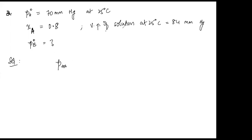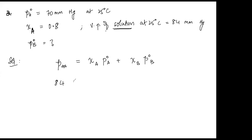Using P_total = X_A · P°_A + X_B · P°_B: 84 = 0.8 × 70 + X_B · P°_B. Since mole fraction of A is 0.8, mole fraction of B = 1 − 0.8 = 0.2. So 84 = 56 + 0.2 · P°_B, giving 0.2 · P°_B = 28, therefore P°_B = 140 mmHg.